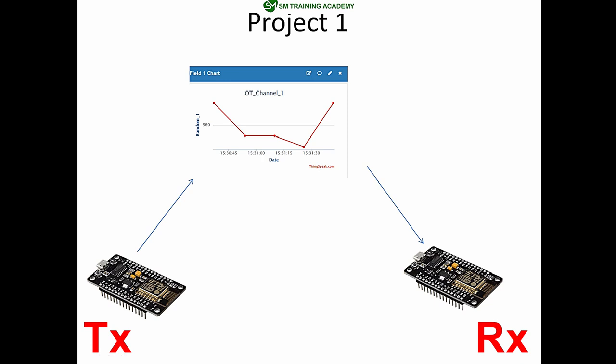Once every 16 seconds this Node MCU will read the analog step value using its analog channel and transmit it directly to the field available in my ThingSpeak server. Based on the knob rotation of the variable resistor, the step value being transmitted will vary. Once every 16 seconds the step values will be loaded to the field available in the ThingSpeak website. That's all about the process for the first Node MCU.